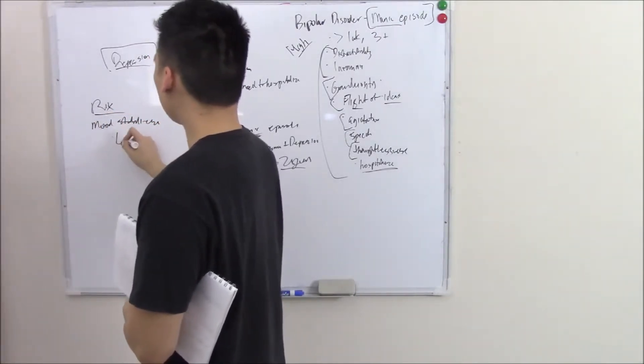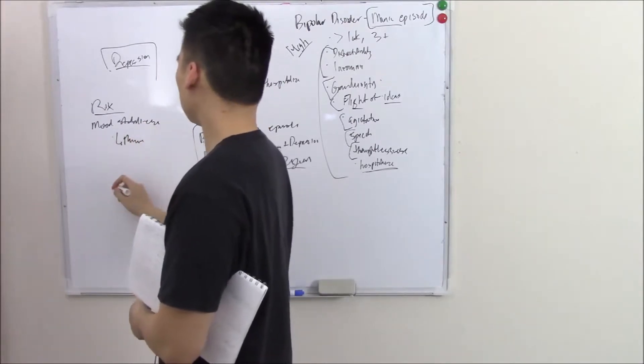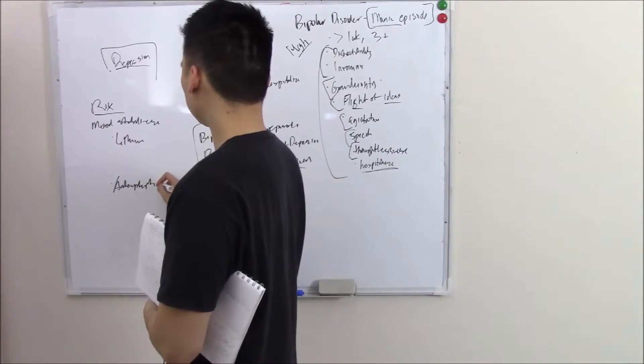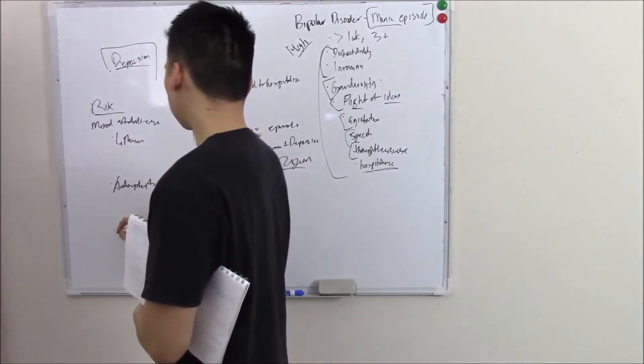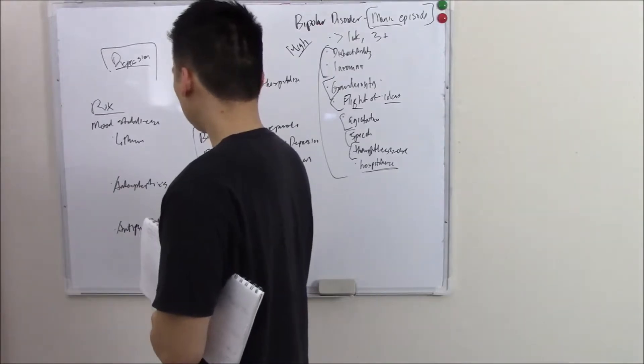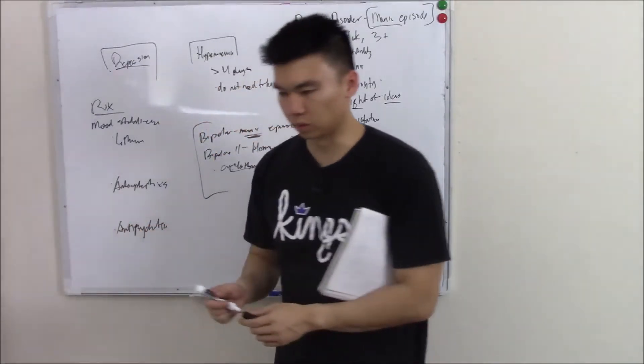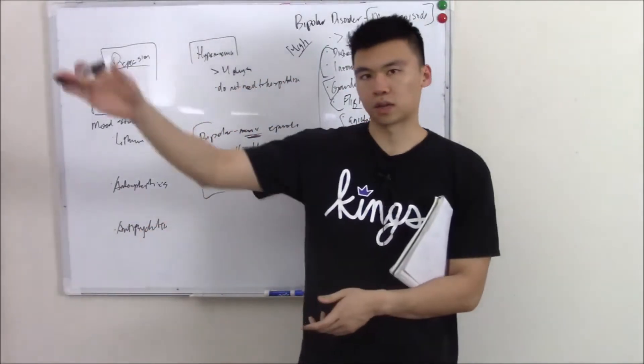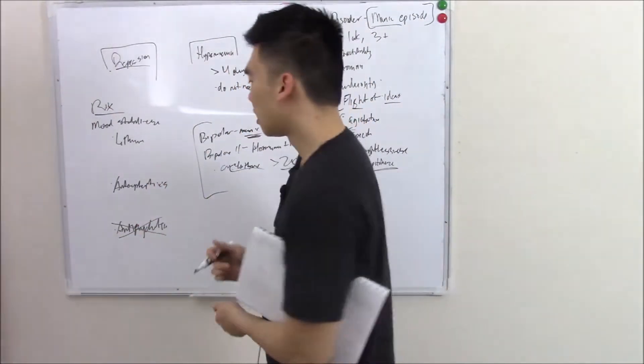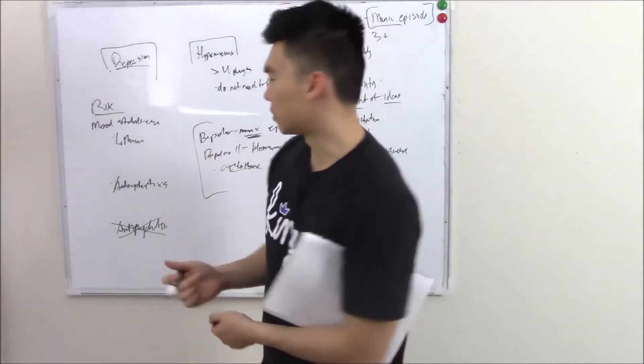These are going to be your lithium. These are going to be your anti-epileptics. Anti-psychotics. Anti-psychotics like olanzapine. We're going to talk about that when we talk about psychotic disorder. So I won't talk about it here, but just know it is often considered one of the first line treatments.